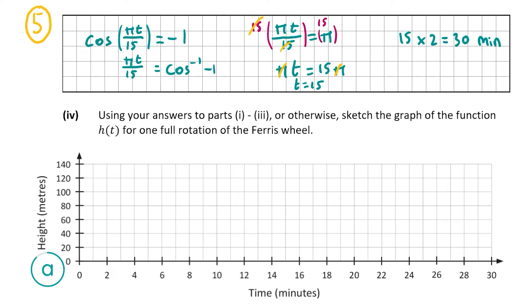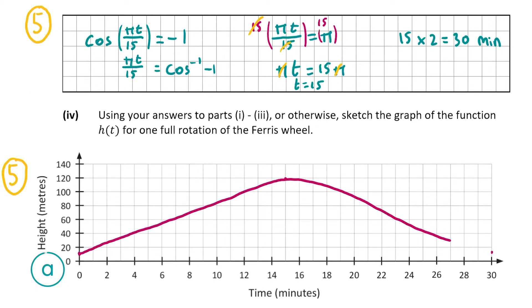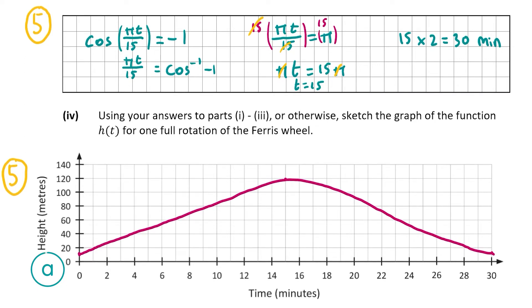For A part 4, also worth 5 marks, using our answers from parts 1 to 3, we sketch the graph of H(T) for one full rotation. It starts at 10 meters, rises to a maximum of 120 meters at 15 minutes, then returns to 10 meters at 30 minutes. The graph should look like a cosine curve shape. Some graphs might look slightly different but should be similar to that.